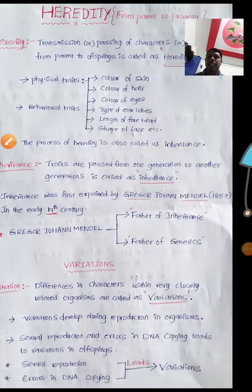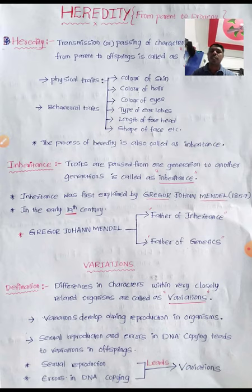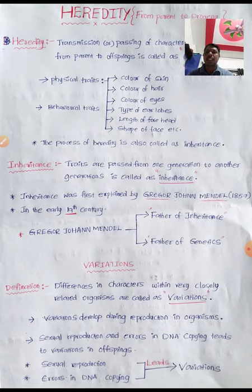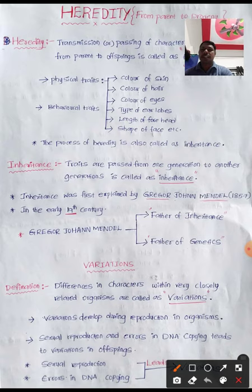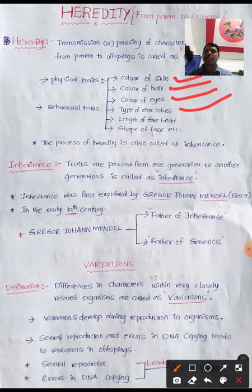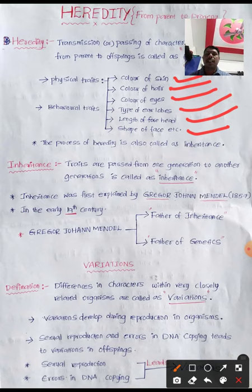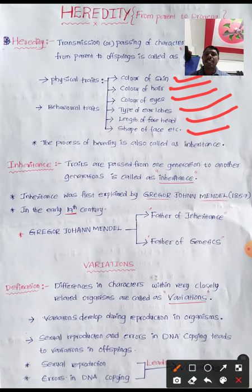Generally, both physical traits and behavioral traits are transmitted from parents to progeny. Physical traits include color of skin, color of hair, color of eyes, type of earlobes, length of forehead, and shape of face. Behavioral traits are also transmitted — some children behave like their parents, which we observe in our surroundings.